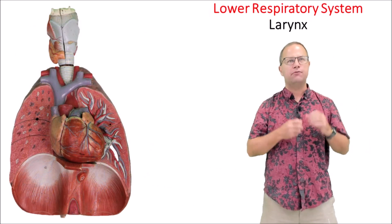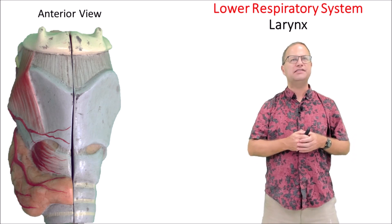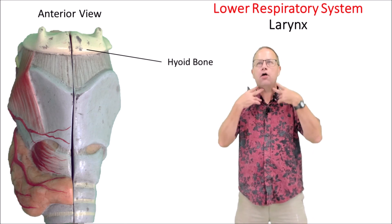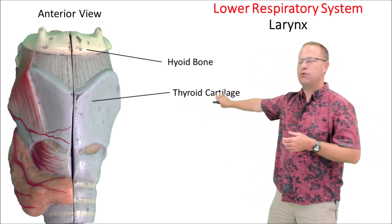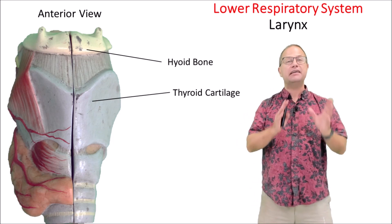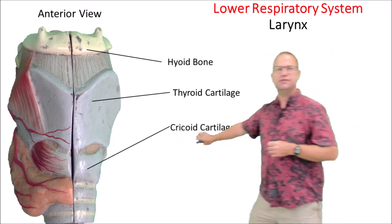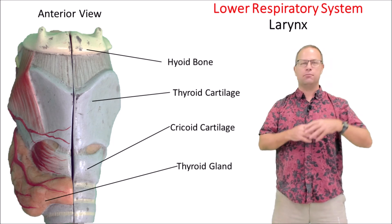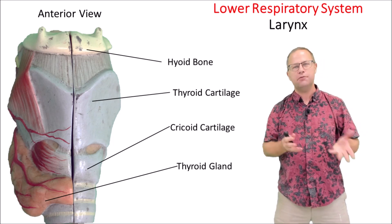Now we're going to take a more detailed view of the larynx, which sits at the superior part of the trachea. We have our hyoid bone at the superior part of the larynx — a vestigial gill arch that helps hold up and support the larynx. Below that we have a very prominent thyroid cartilage, which makes up the Adam's apple, very prominent particularly in males who tend to have a larger larynx. Below that we have the cricoid cartilage, which is fairly minor in the front but very major in the back part of the larynx. We also have the thyroid gland, which is part of the endocrine system and is responsible for secreting thyroxin controlling metabolic rate and calcitonin controlling calcium levels.